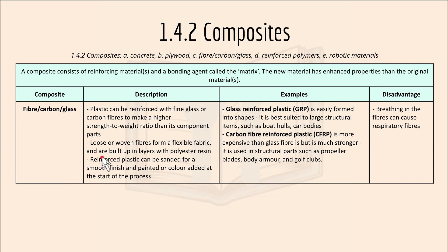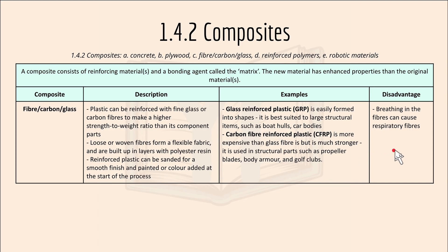Fiber — carbon or glass — reinforced plastics have a higher strength-to-weight ratio than their component parts. Loose or woven fibers form a flexible fabric built up in layers with polyester resin, and can be finished smooth and painted. GRP — glass reinforced plastic — is easily formed into shapes and best suited to large structural items such as boat hulls, boathouses or car bodies. CFRP — carbon fiber reinforced plastic — is more expensive than glass fiber but much stronger, used in propeller blades, body armor and golf clubs. A disadvantage is that breathing in the fibers can cause respiratory issues.